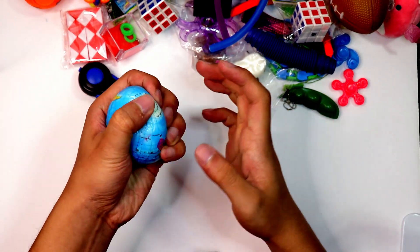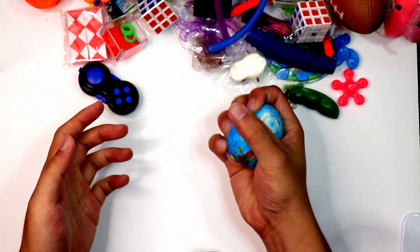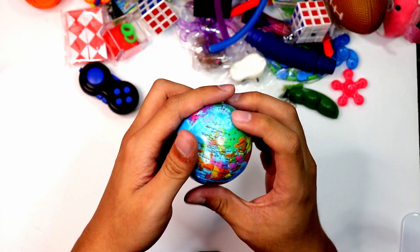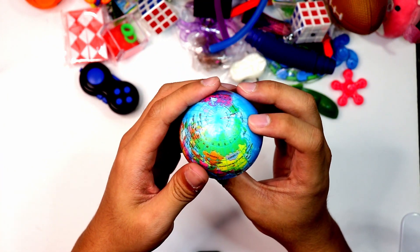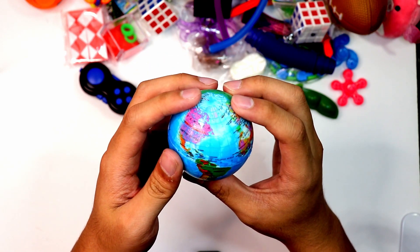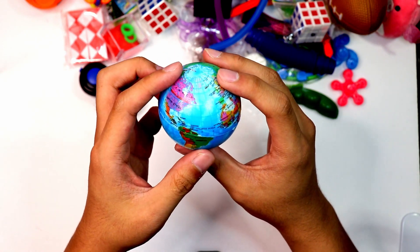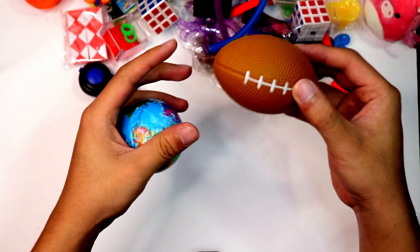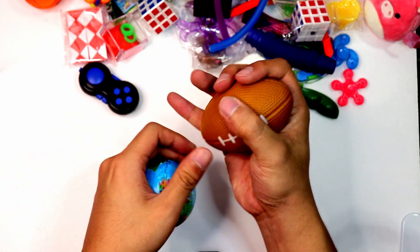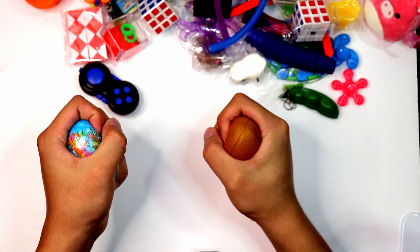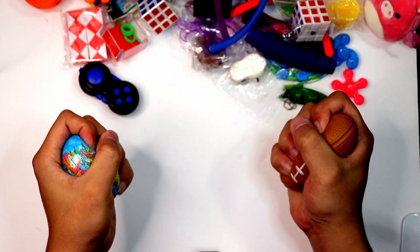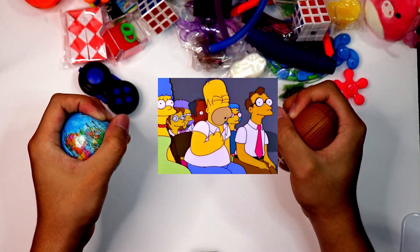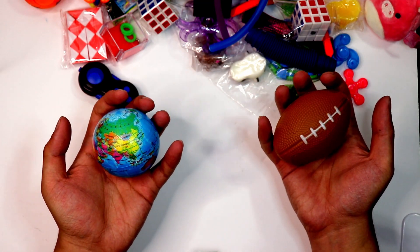Let's see the obvious first. We have those stress balls. Just squeeze it. This one is a globe. You can see a lot of different words on here for the countries, so it's readable, but it's just a stress ball. Same with this football here. Just squeeze it and release your stress. Just keep on squeezing.